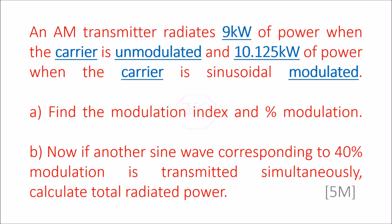Looking at the given data: 9 kilowatt of power is for the unmodulated carrier, represented as Pc. After sinusoidal modulation the power is 10.125 kilowatt, which represents total power Pt. We need to calculate the modulation index, from which we can also calculate the percentage modulation.